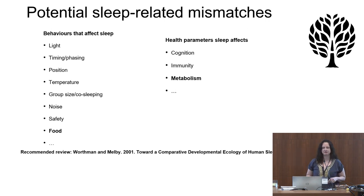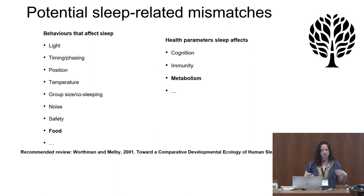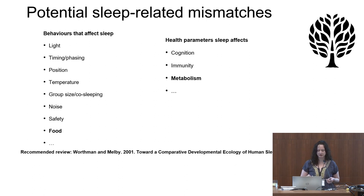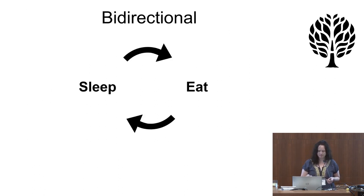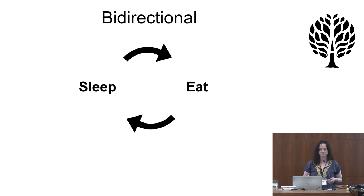Here's a list of things I'm not going to talk about that could have to do with sleep-related mismatches. I am going to talk about food metabolism, but there are so many things about the modern world that could have an effect different from our adaptations to sleep, including light and temperature. Metabolism is particularly interesting because there are bidirectional relationships — what we eat can affect how we sleep, and how we sleep can affect how we process what we eat.